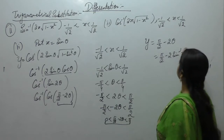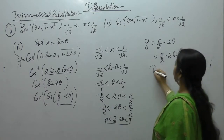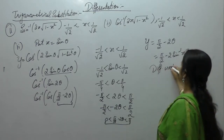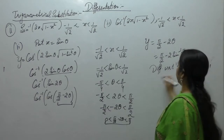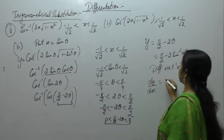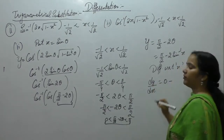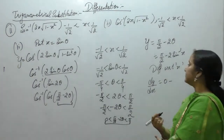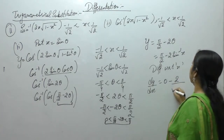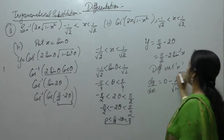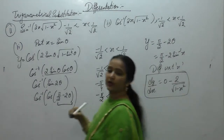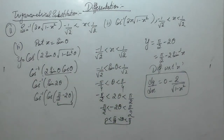Since theta equals sine inverse x, differentiate with respect to x. The derivative of π/2 is 0, and the derivative of sine inverse x is 1 upon square root of 1 minus x squared. So dy upon dx equals minus 2 upon square root of 1 minus x squared.